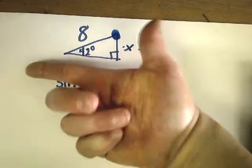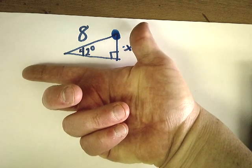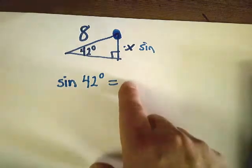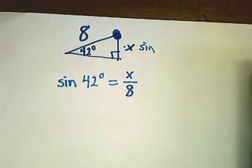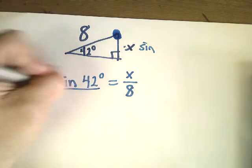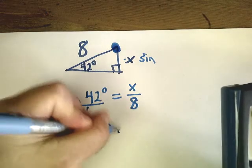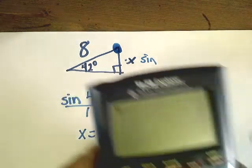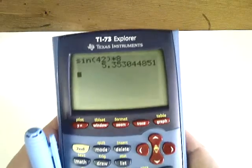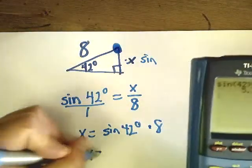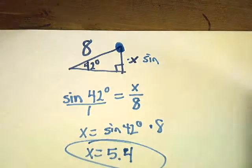For sine or cosine, whatever is on your thumb goes on top of the fraction, and the hypotenuse goes on the bottom. So x goes on top and 8 on the bottom. Cross products: 1 times x equals sine(42°) times 8. I type sine(42°) times 8 into the calculator: 5.35. So x equals approximately 5.4.